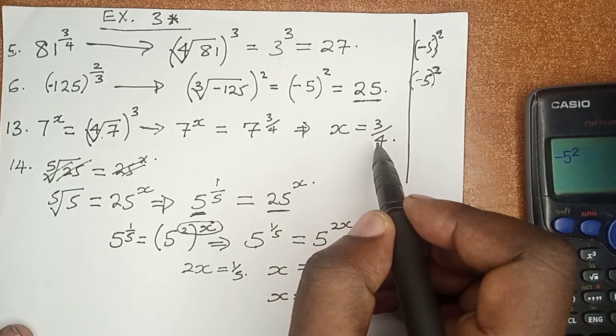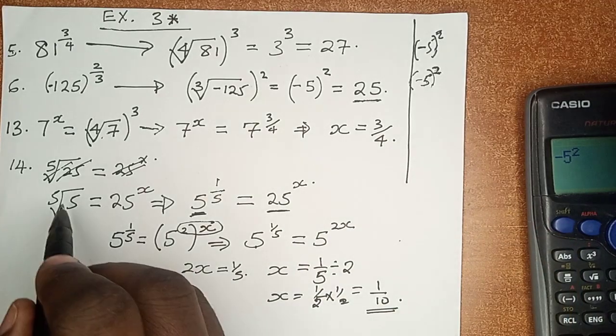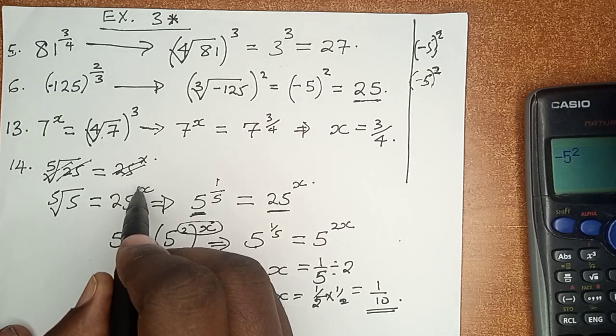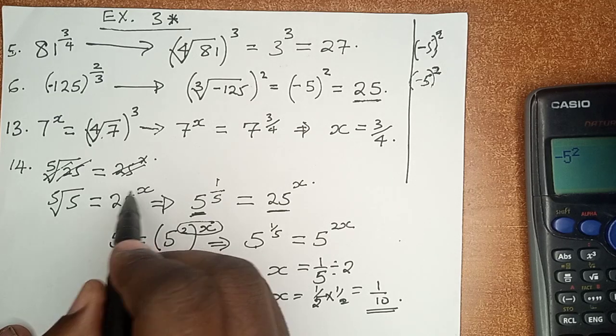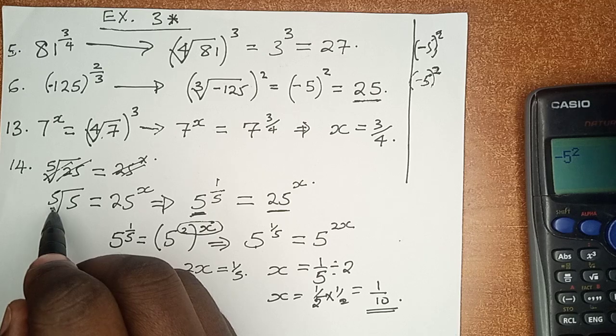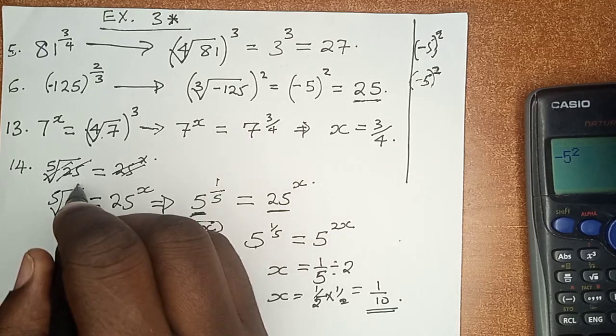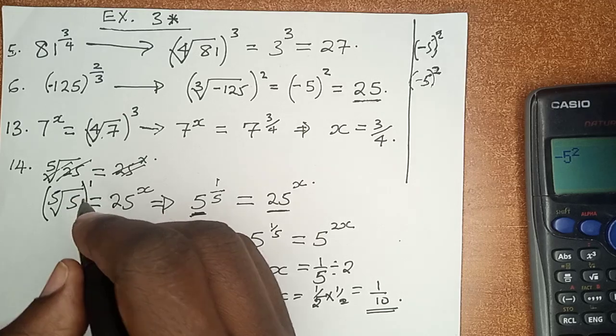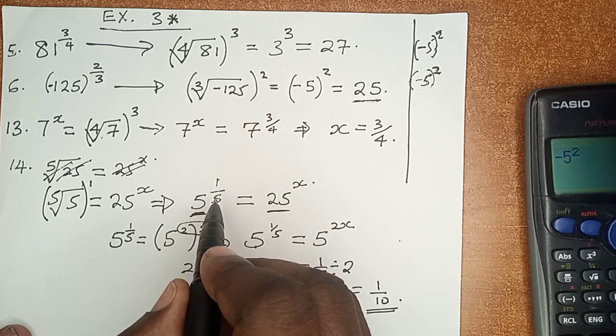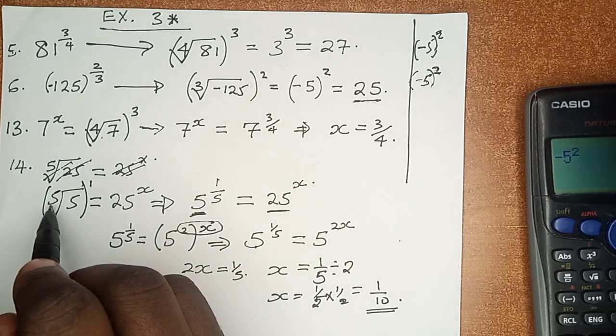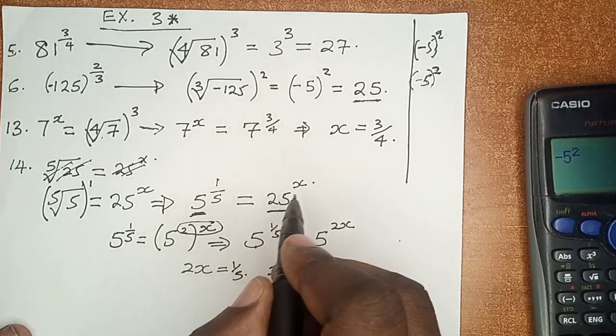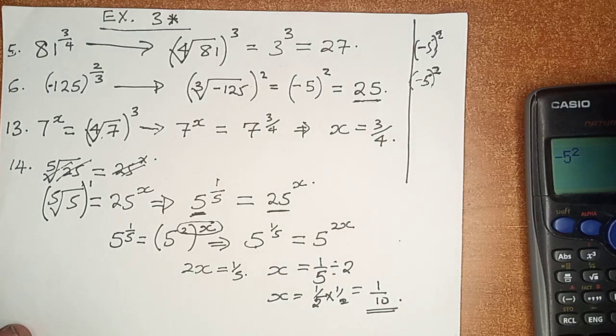Let's now go to number 14. Number 14, we have the 5th root of 5, which is equals to 25 raised to power x. We have to take great care here. 5 at this position must have been at the denominator position. And because there is nothing here, we can't say there is nothing because there is obviously a 1. So it has to be 5 raised to power 1 over 5 because 5 must have been at the denominator position, which is equals to 25 raised to power x.